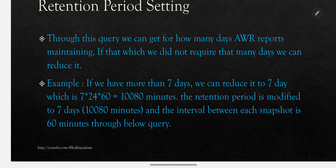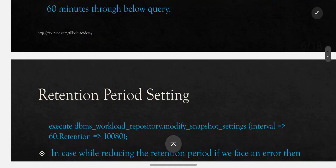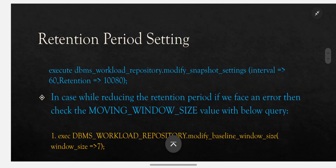7 days equals 7 × 24 × 60 = 10,080 minutes. The retention period is modified to 7 days — meaning 10,080 minutes — and the interval between each snapshot is 60 minutes. Execute: dbms_workload_repository.modify_snapshot_settings(interval => 60, retention => 10080);